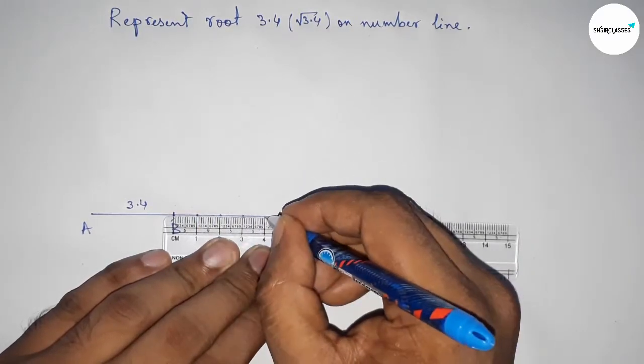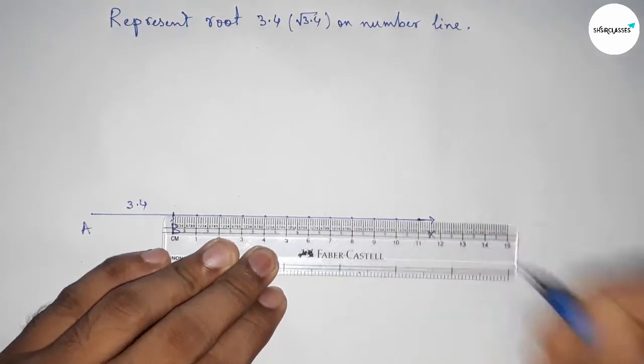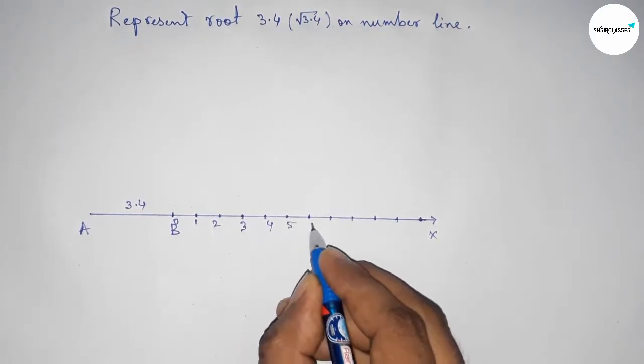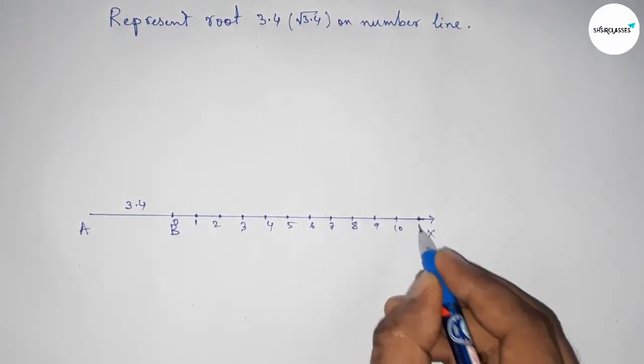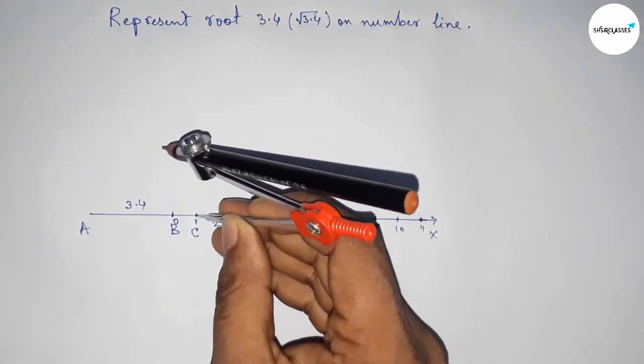Mark the numbers starting from 0, 1, 2, 3, 4, 5, and so on. This is point C. Now we have to bisect the line AC.